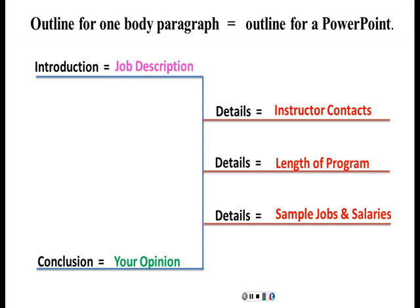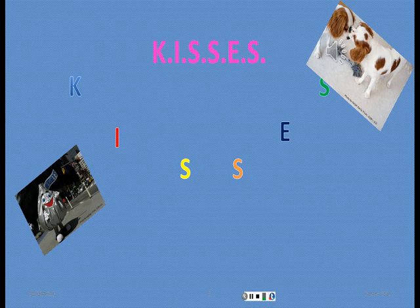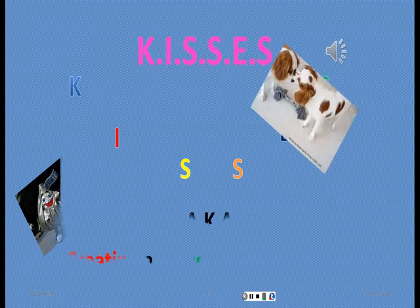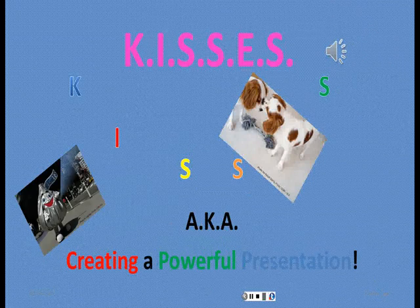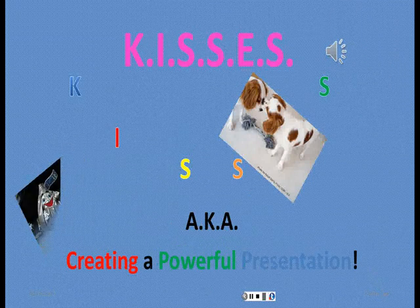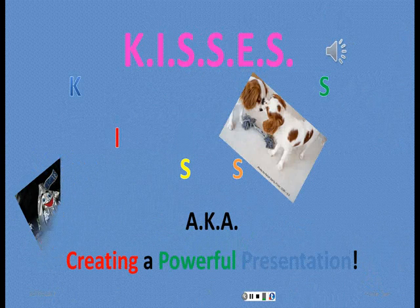Let's look at a bad slide now. So far, what do you see here? You see the acronym KISSES again, but it's kind of hard to see. There's so much color here — there's noise, movement, too many pictures. This is what you should not do. You're not here for a job in Hollywood; you're here to make a professional presentation.